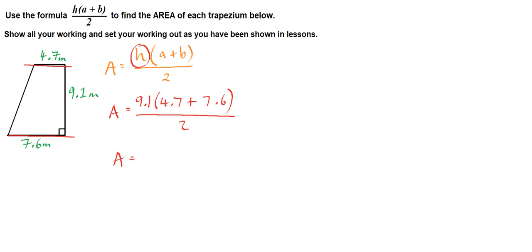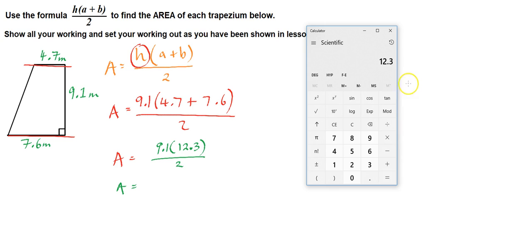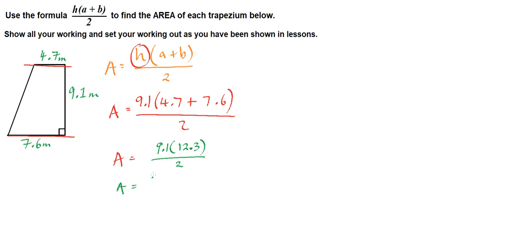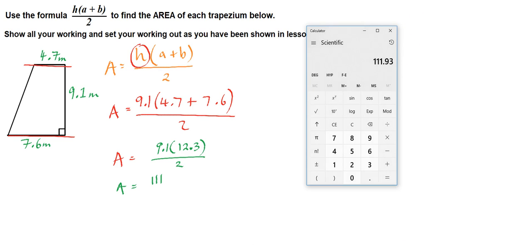So in our next line of working, it should look like this. 12.3 is going to have to be multiplied by 9.1 and then divided by 2. So again, just step by step, there's no need to rush. And then we have 12.3 and we multiply 12.3 by 9.1, and that is 111.93.